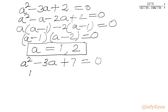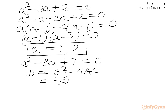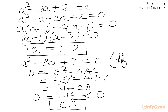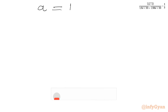Checking the discriminant for a² minus 3a plus 7 equal to 0: d equals b² minus 4ac equals (-3)² minus 4(1)(7) equals 9 minus 28 equals minus 19, which is negative. So this quadratic generates only complex solutions and is rejected since we are looking for real solutions only. Therefore the accepted values are a equal to 1 and a equal to 2.